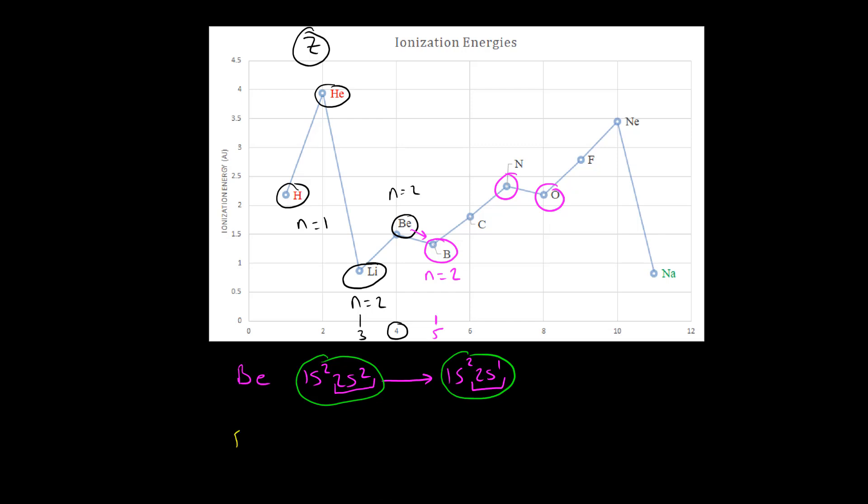Let's compare that to boron. So boron has five electrons, 1s2, 2s2, 2p1, and when we remove an electron, we remove the first electron here, the highest energy electron, this becomes 1s2, 2s2. Now in this case, we've actually created a stable electron configuration. We've created a full subshell.